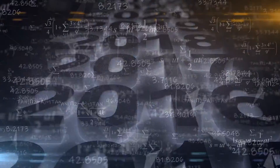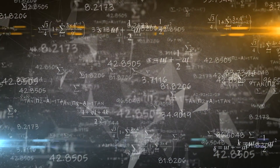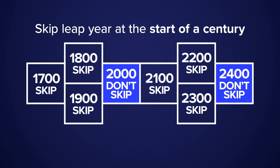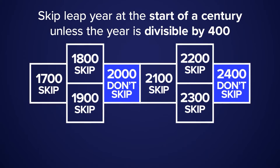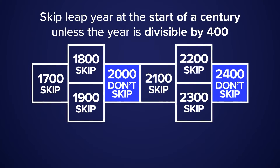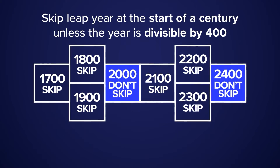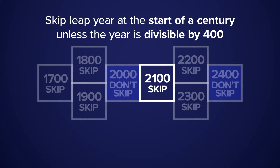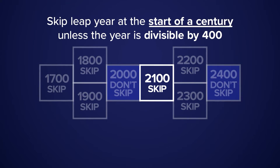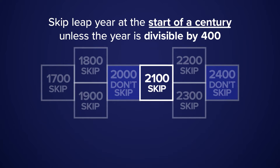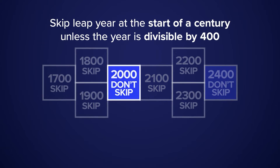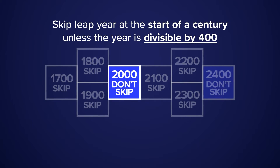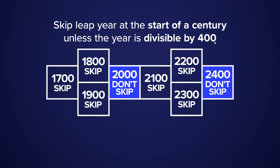The math gets messy, and skipping years does help to an extent. You skip a leap year if it falls on the start of a century, unless that year is divisible by 400. So for example, every four years we'll continue to acknowledge the extra day in February. But in the year 2100, we will skip that leap year since it falls on the start of a century and is not divisible by 400. Back in the year 2000, that was a leap year, but since it was divisible by 400, we did not skip it.